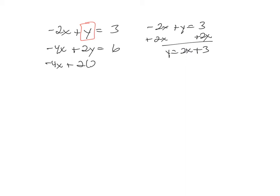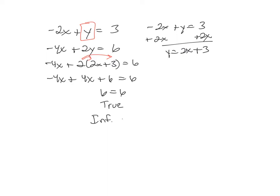So instead of y I substitute 2x plus 3 into the other equation. Some people find substitution involves a lot of steps, and I get that, but it's my preference. After simplifying, negative 4 and positive 4 cancel to 0, and I'm left with 6 equals 6. That is a true statement, so the answer is infinitely many solutions — it ends up being the same line.